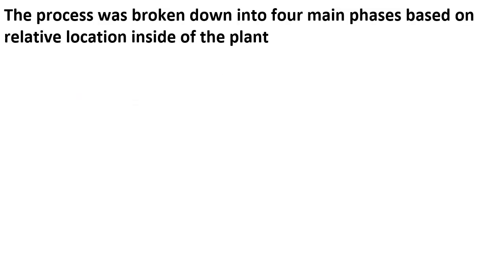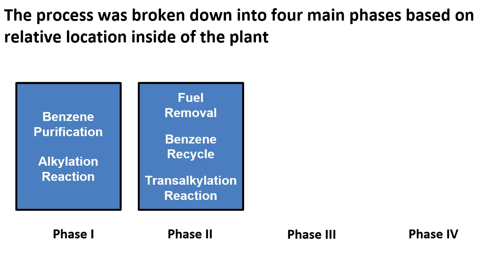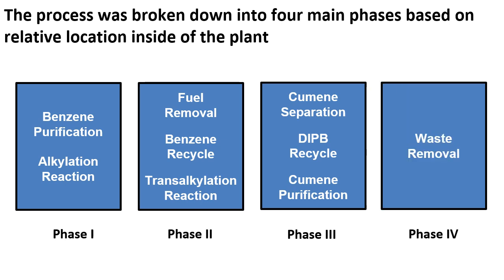The process was broken down into four main phases based on relative location inside of the plant. Phase 1 included benzene purification and alkylation reaction. Phase 2 included fuel removal, benzene recycle, and trans-alkylation reaction. Phase 3 included cumene separation, DIPB recycle, and cumene purification. Finally, Phase 4 includes waste removal.